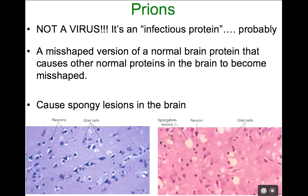Those spongy lesions in the brain tissue cause neural symptoms — dementia, memory loss, impaired senses, delirium, senility, and eventually death with prion diseases. Prion diseases cause your brain proteins to become misshapen, aggregate together, and form these lesions in the brain.